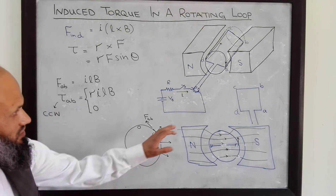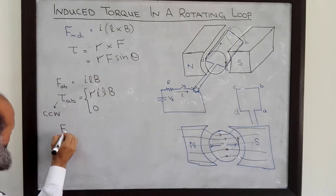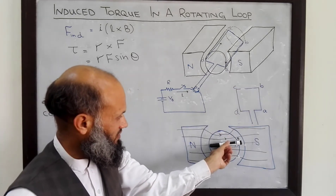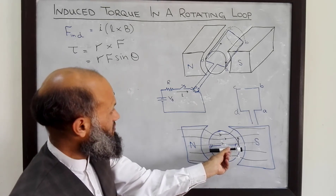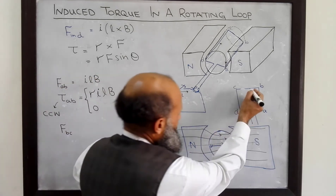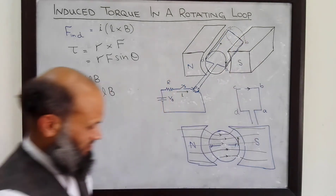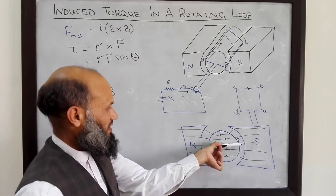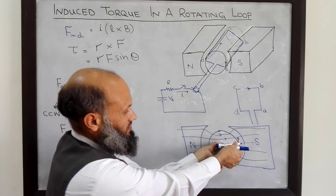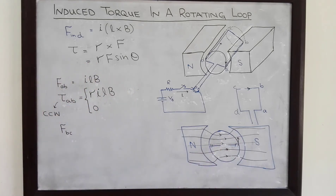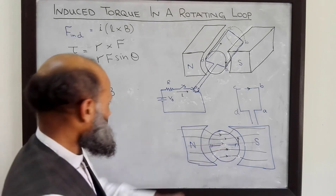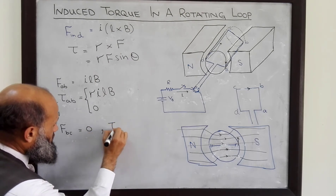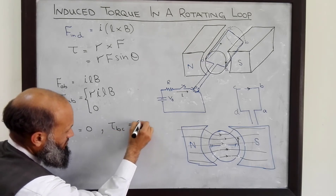Now let's determine the torque induced due to segment BC. This segment BC is lying at the back end. The direction of current in this segment is from C to B. For this segment, L is in this direction and B is also in this same direction — both L and B are parallel. So L × B is simply equal to zero, and therefore the torque due to this segment is also equal to zero.